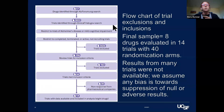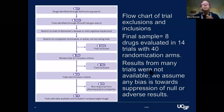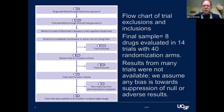We ended up with eight drugs evaluated in 14 trials with 40 randomization arms. A big discussion in the review of this paper was that results for many trials were not available. We feel it's reasonable to assume that if a company had a drug that improved cognition, the world would know about it because there's a gazillion dollars on the line. So we suspect that any bias is likely to be in favor of things looking better in our analysis than they actually are if we had all the data.